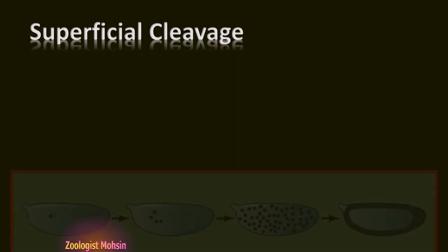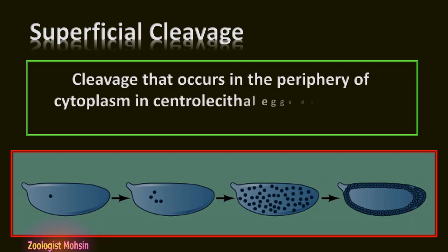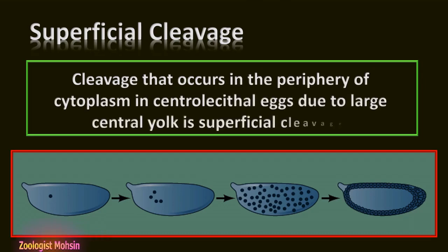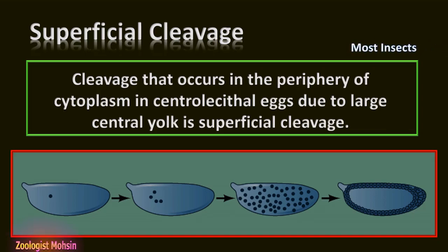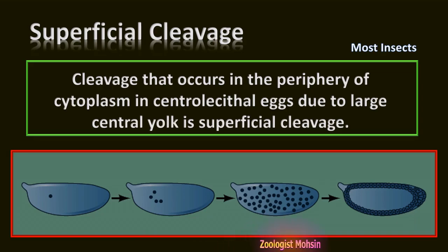Superficial cleavage: This cleavage occurs in the periphery of the cytoplasm in centrolecithal eggs, due to the large central yolk mass. This is the unique feature of most insects only. In the diagram, you can observe that only the outer layer of cells is formed, while the central portion is occupied by yolk, which inhibits cleavage. This particular type is limited to most insects only.